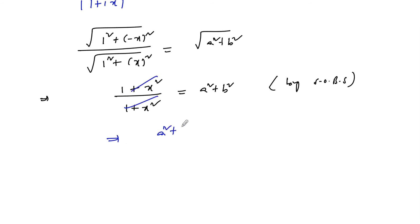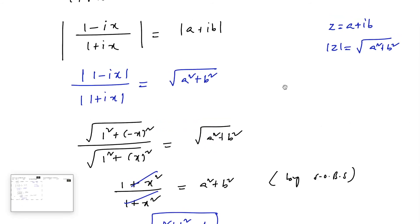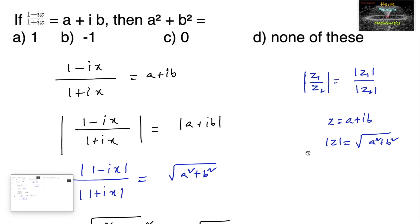Therefore, a square plus b square is equal to 1. So option A is the right answer.